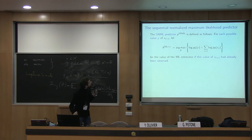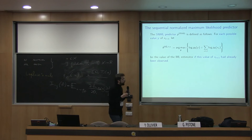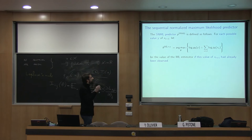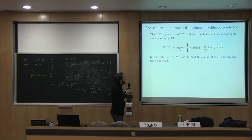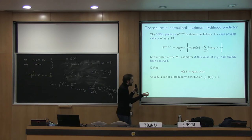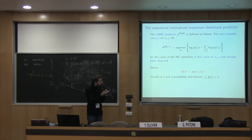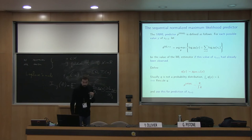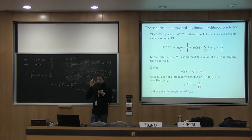The SNML predictor works as follows: for each possible value of the next observation, you use the value of theta that gives more weight to that possibility — the maximum likelihood estimator if you had already observed it. You decide that the probability of y is given by the probability using the model that has already seen y. Of course, you're increasing the probability of every possibility, so usually your probabilities sum to something greater than one — but then you just rescale and use this for prediction.